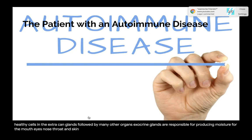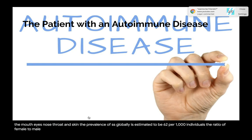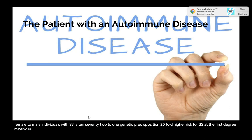The global prevalence of SS is estimated at 62 per 1,000 individuals, with a female-to-male ratio of approximately 10–14 to 1. Etiology: genetic predisposition confers a 20-fold higher risk if a first-degree relative is affected. Environmental triggers include infections of the glands such as HCV and Epstein-Barr virus.